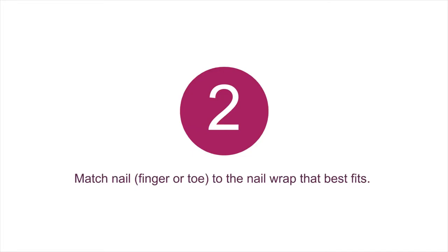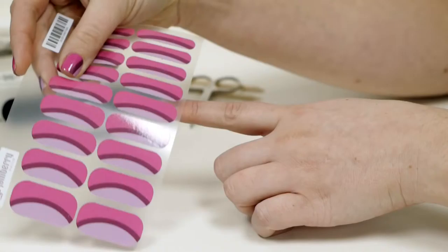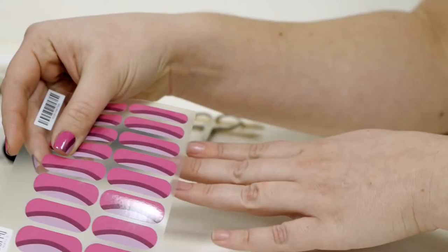Next, match your nail to the wrap that best fits by holding the sheet over your nails. Our clear backing can help you more accurately select a size. Keep in mind it's better to err on the side of small than to pick a wrap that's too large. These can be easily trimmed if necessary.